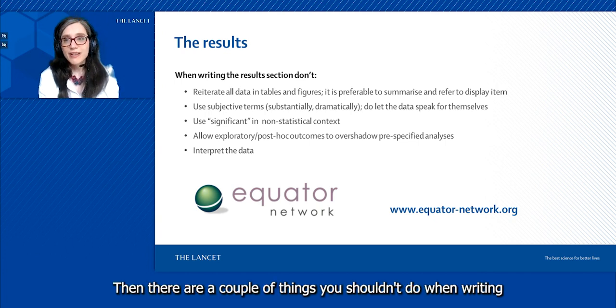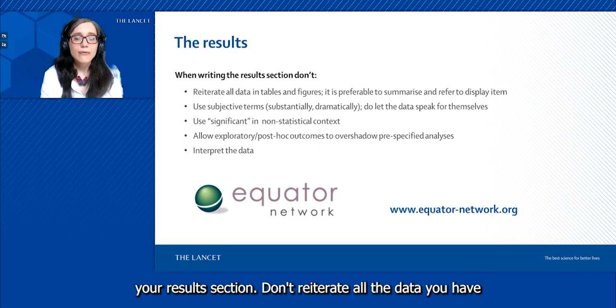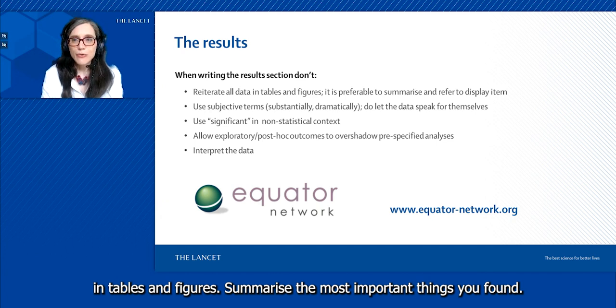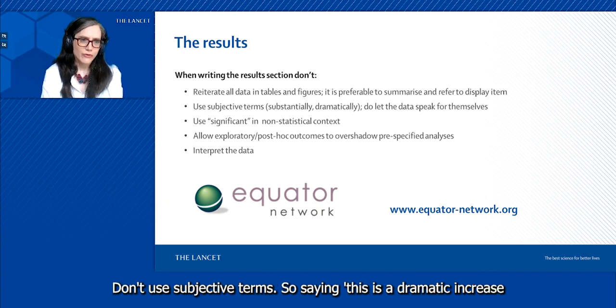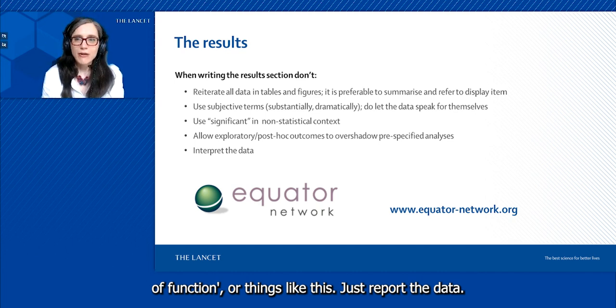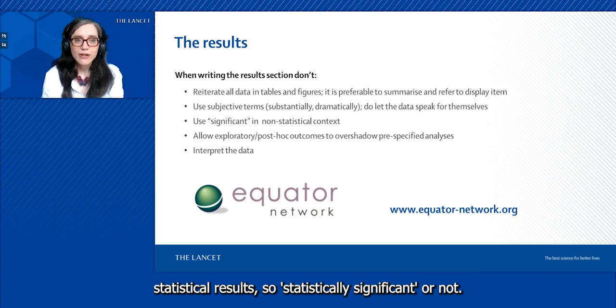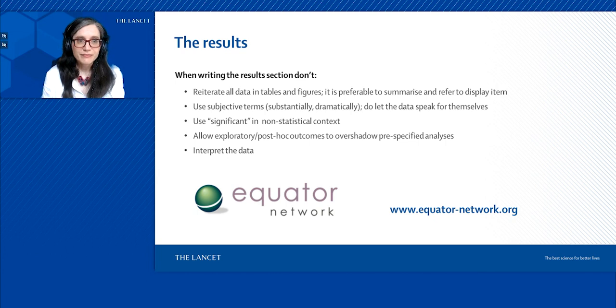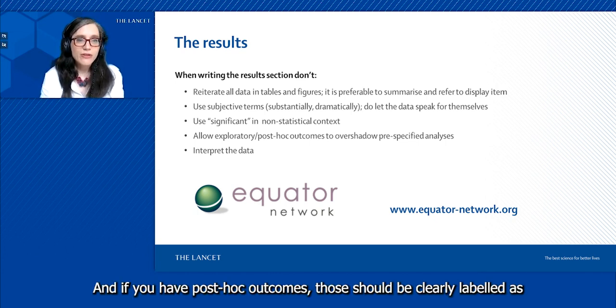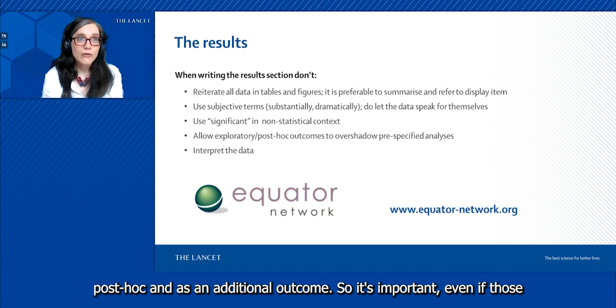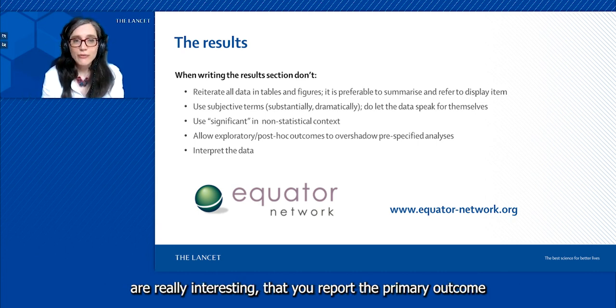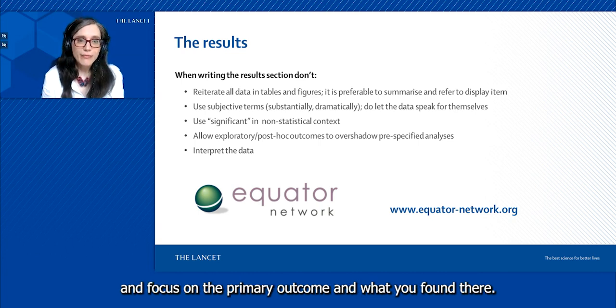Now a couple things you shouldn't do when writing your results section. Don't reiterate all the data you have in tables and figures—summarize the most important things you found. Don't use subjective terms, saying this is a dramatic increase of function or things like this. Just report the data. If you use significance, try to only use it to describe your statistical results—statistically significant or not. If you have post-hoc outcomes, those should be clearly labeled as post-hoc and as an additional outcome.